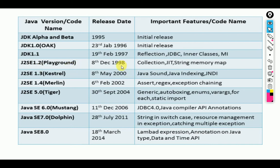After that, JDK SE Standard Edition 1.2 came in 1998 for desktop applications. It introduced Collections, JIT — Just In Time compiler, string memory mapping, and more. Then SE 1.3 was released in 2000 with new features like Java Sound, Java Indexing, JNI, and some other features. The most stable version now is SE 8.0.